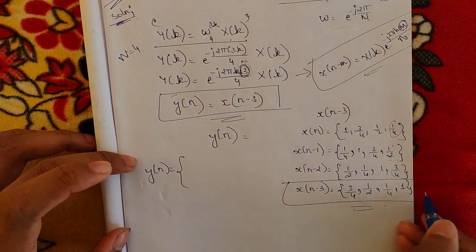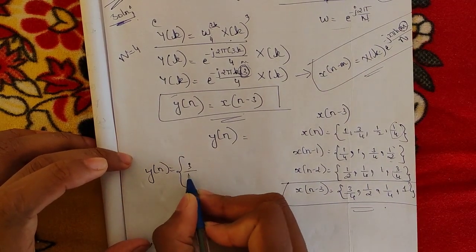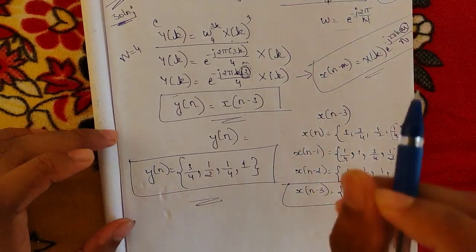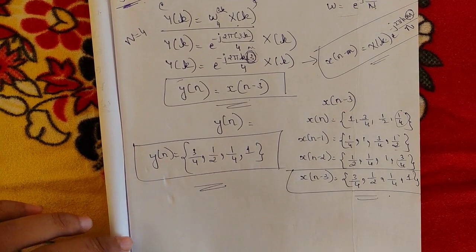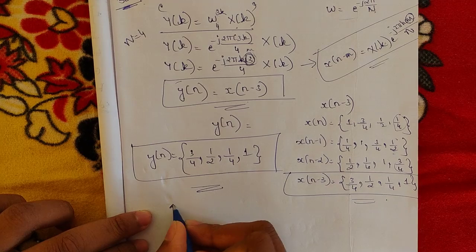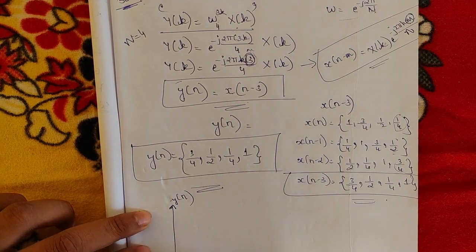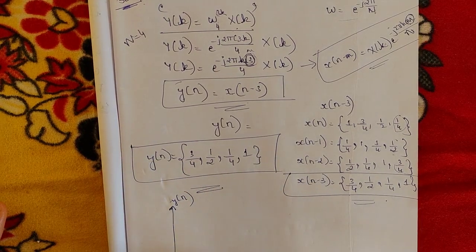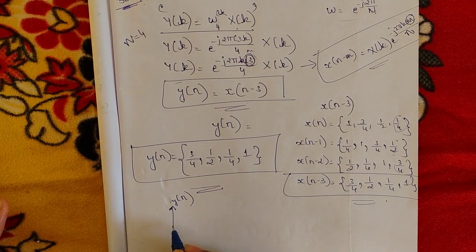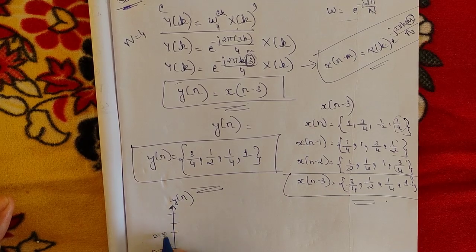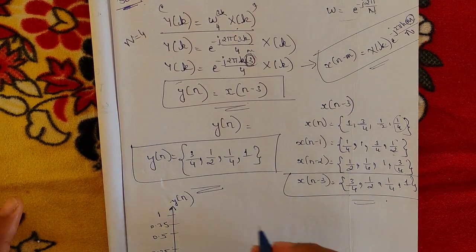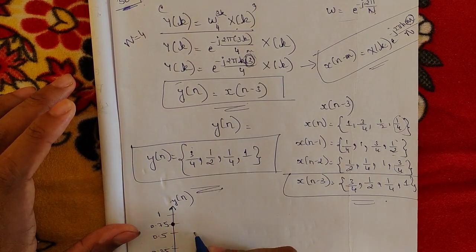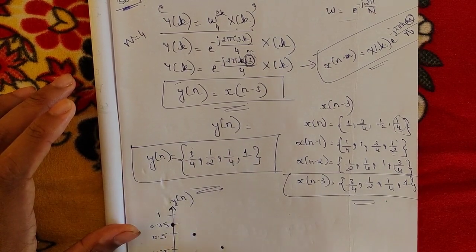So the final answer is y(n) = {3/4, 1/2, 1/4, 1}. Now plotting y(n) versus n: n ranges from 0 to 3. Marking values — 0.25 = 1/4, 0.5 = 1/2, 0.75 = 3/4, and 1. So y(0) = 0.75, y(1) = 0.5, y(2) = 0.25, y(3) = 1. That is the plot of y(n), solved using the circular time shift property.